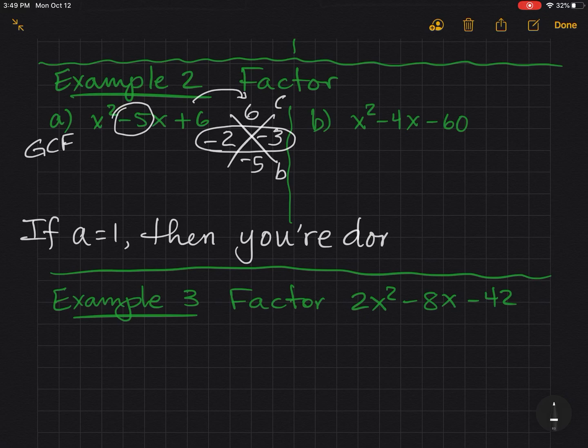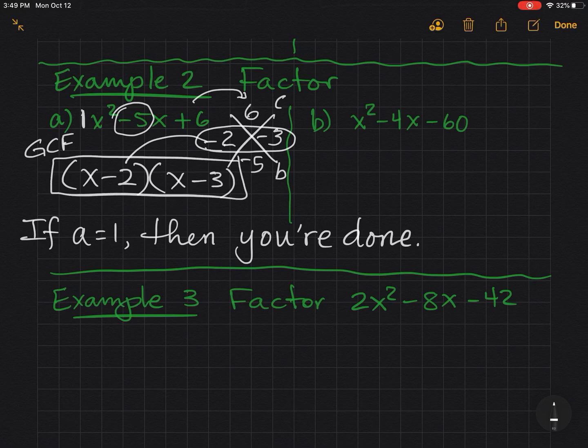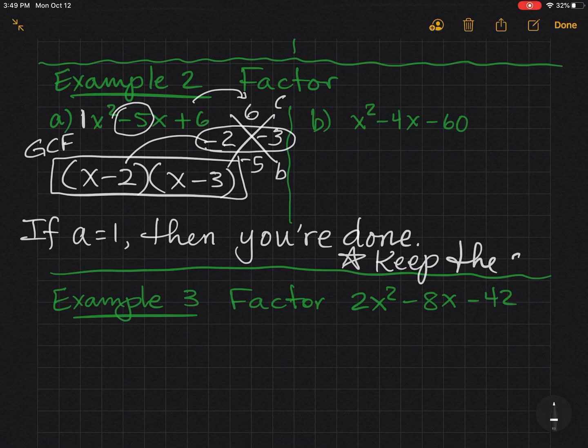Always remember that. Okay? So the leading coefficient is 1. So once I solve my diamond, I'm done. And keep the signs. So I got x minus 2, and I got x minus 3. Remember that. Keep the signs. And it's just that easy.